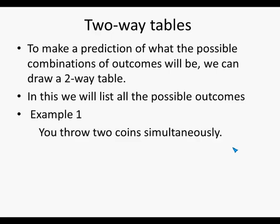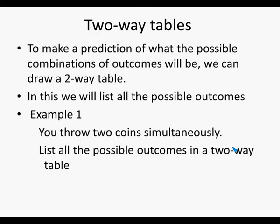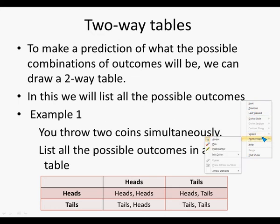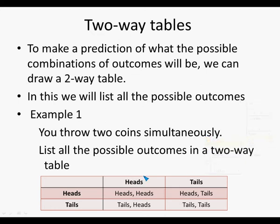Example one: you throw two coins simultaneously, so you're throwing the two coins at the same time. List all the possible outcomes in a two-way table. With the first coin you can flip heads or tails, and with the second coin you can also flip heads or tails.